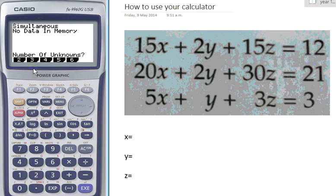The number of unknowns is talking about how many variables you've got. So if we look at our equation, we've got an X, a Y, and a Z. That's 3 unknowns, so we're going to choose 3, which is F2.